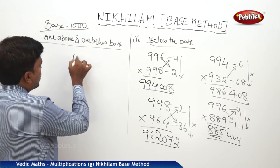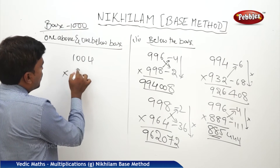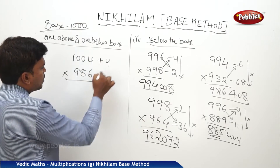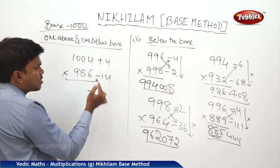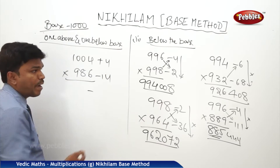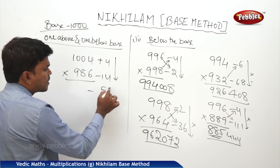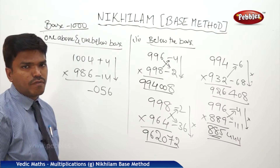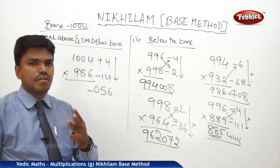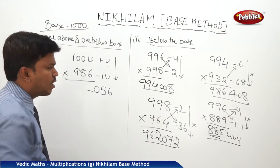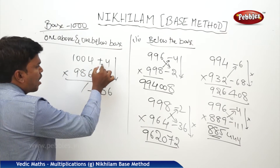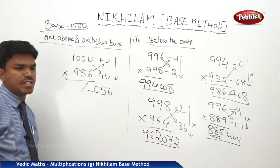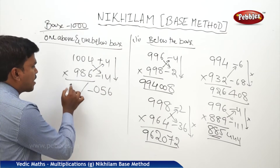Let us take 1004 into 986. This is plus 4 and this is minus 14. Plus into minus gives minus, so the product is minus 56. But it is 056, because the right side part must have three digits. Now cross addition or subtraction — 986 plus 4 is 990.